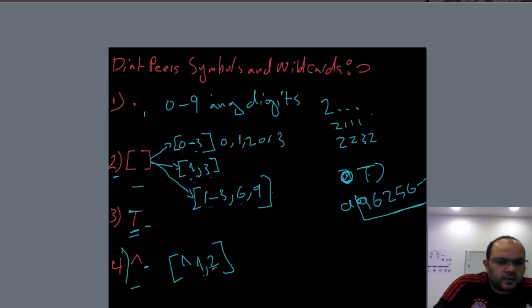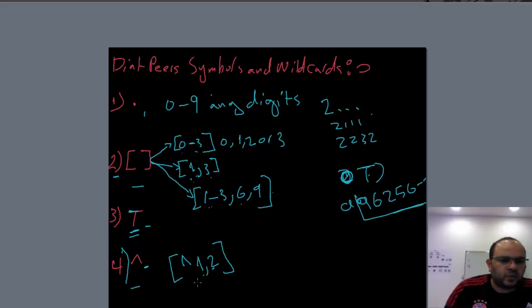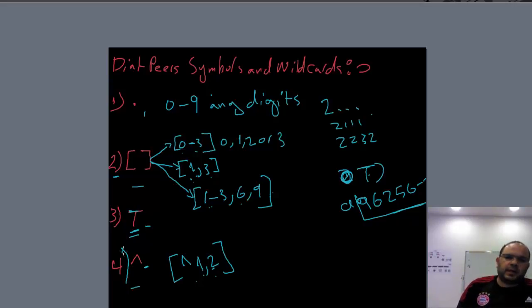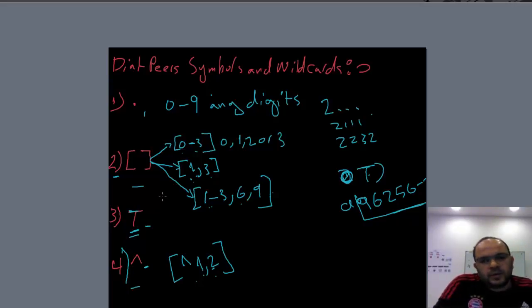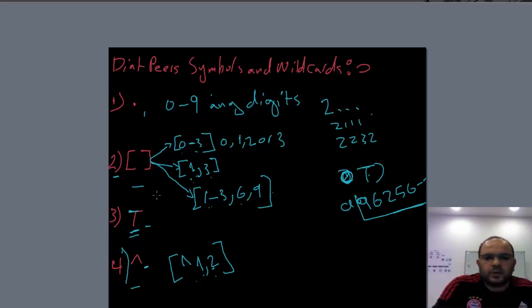The hat (caret) symbol means exclude — don't use this number. For example, [^12] means don't include 1 or 2; all other digits (0, 3, 4, 5, 6, 7, 8, 9) are included. These are the four most important symbols and wildcards we are going to use in our configuration. Let's now go to our configuration file to see how to apply what we've talked about in theory.